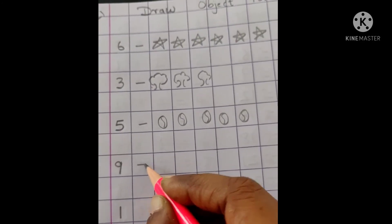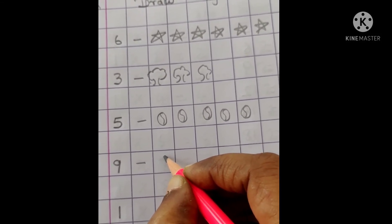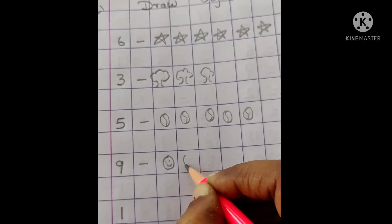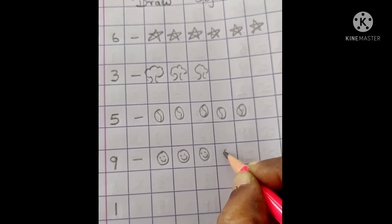Next is number 9. What shall we draw? We will draw smiley. 9 smileys. 1, 2, 3,